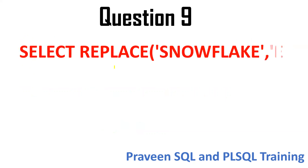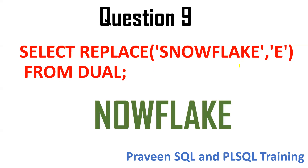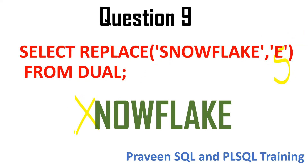The ninth question is about the REPLACE function. Wherever 'S' is there, I am trying to remove it. If instead of removing you put something like 'X', then 'X' will replace 'S'. If you do not put a replacement value, then 'S' will get removed. This was a typo — the question uses 'S', and wherever 'S' is there, we are replacing or removing it.